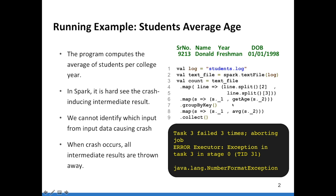It then finds the age of the student by subtracting the current date from the date of birth. At line number 7, it groups the data by key, where the key is the college year. At line number 8, it applies a map operation to find the average age of all the students per key.